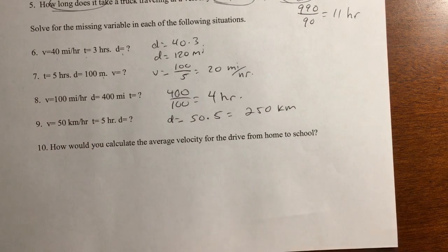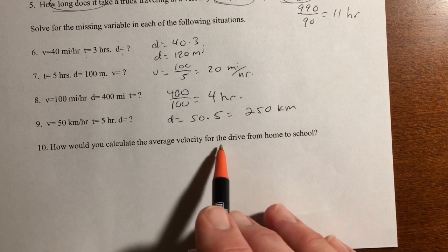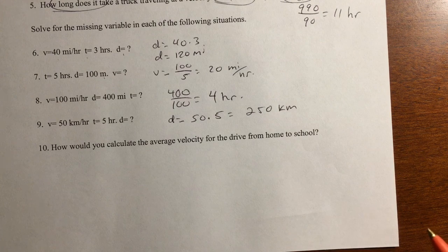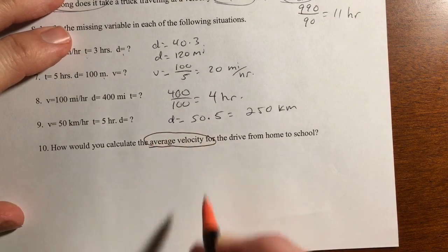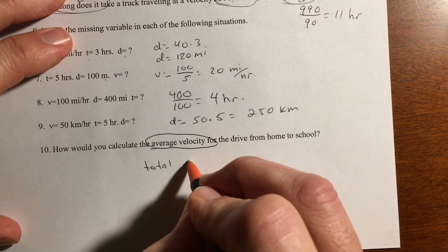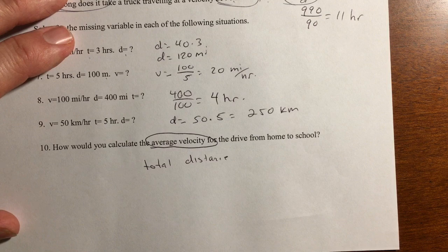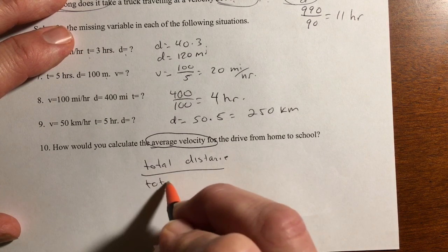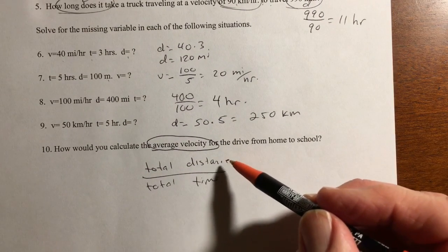Now, the last question is kind of a personal thing for you. It says, how would you calculate the average velocity for the drive from home to school for you? What would you do to calculate your average velocity? Well, again, when we talk about average, you have to take the total distance. So how far is it from your house to school divided by the total time it takes. So on your own, take a guess about how far you are.